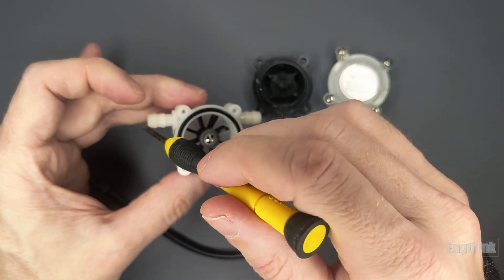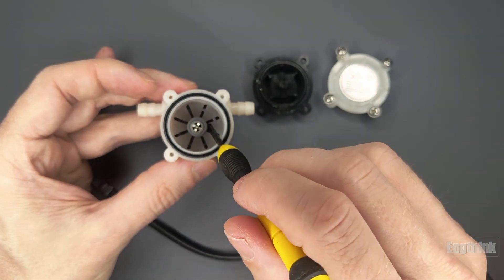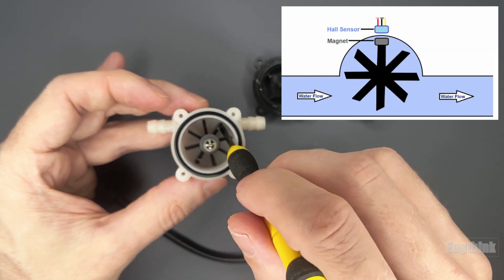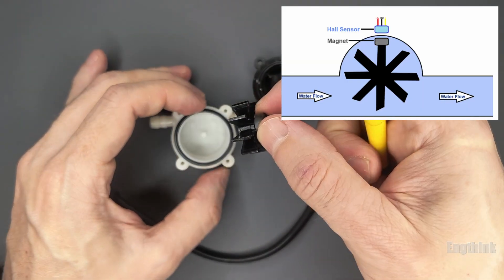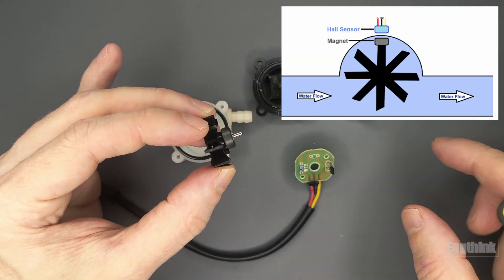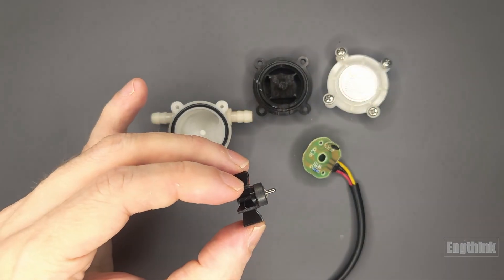So how does it operate? Water flows through the lower plastic body, causing the rotor with the attached magnet to spin. Each full rotation of the rotor moves the magnet past the Hall effect sensor. The sensor detects the magnetic field changes and generates a pulse each time this occurs.